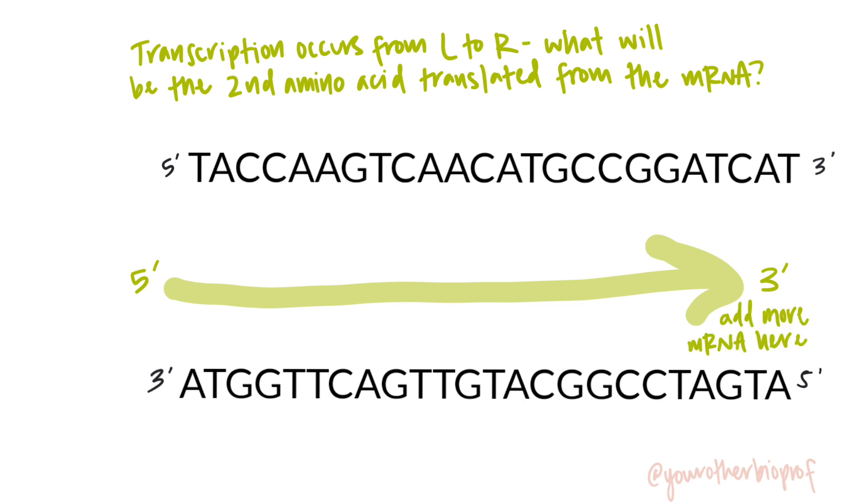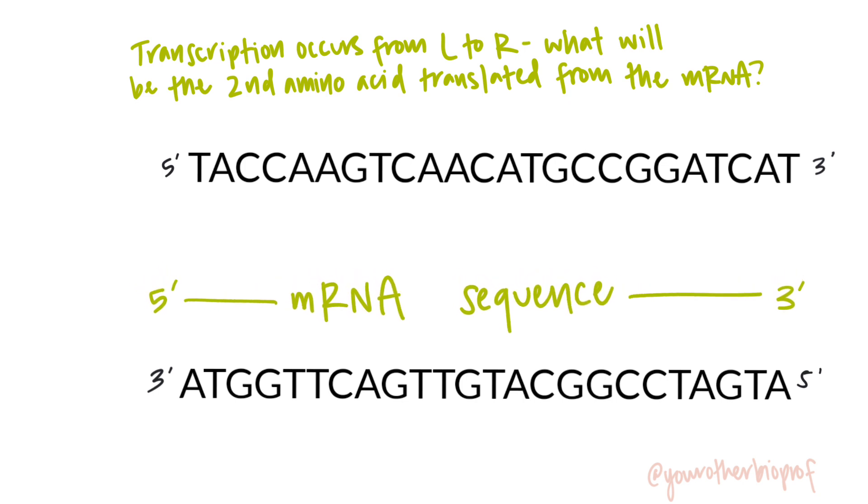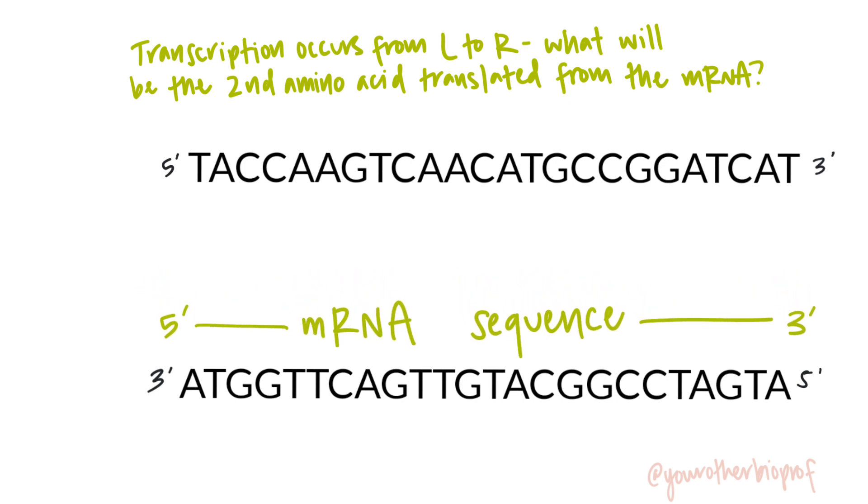So if transcription is happening from left to right, that means we are adding on on the right side to our growing RNA. So this is the orientation of the mRNA that we're making. So which DNA strand is the template strand? It's got to be the bottom one, right? Anti-parallel to the mRNA that we're producing during transcription. Well, if the bottom strand is our DNA template strand, we can go ahead and transcribe that.